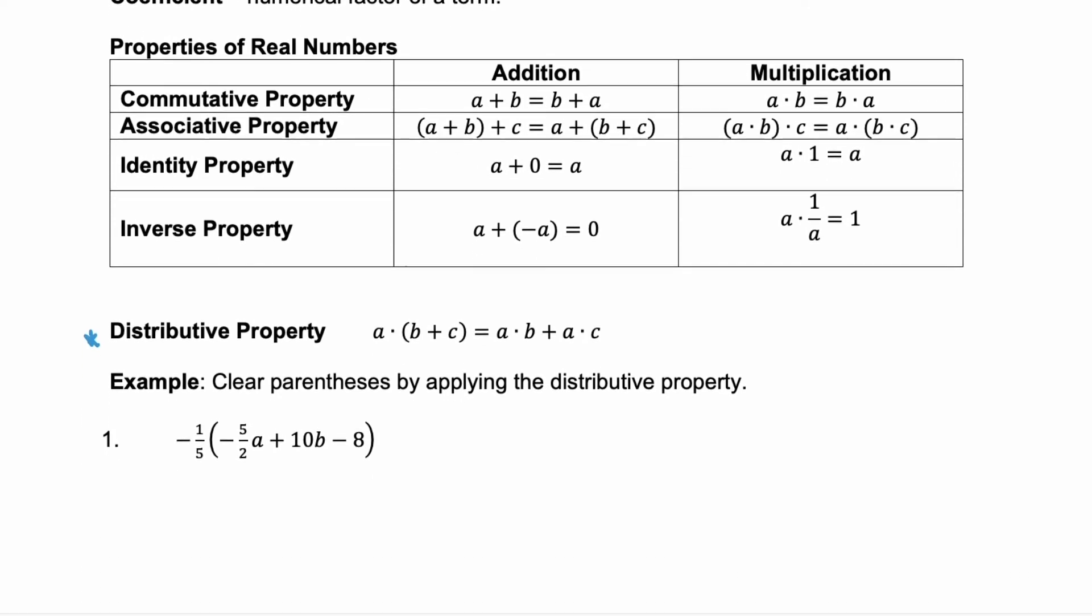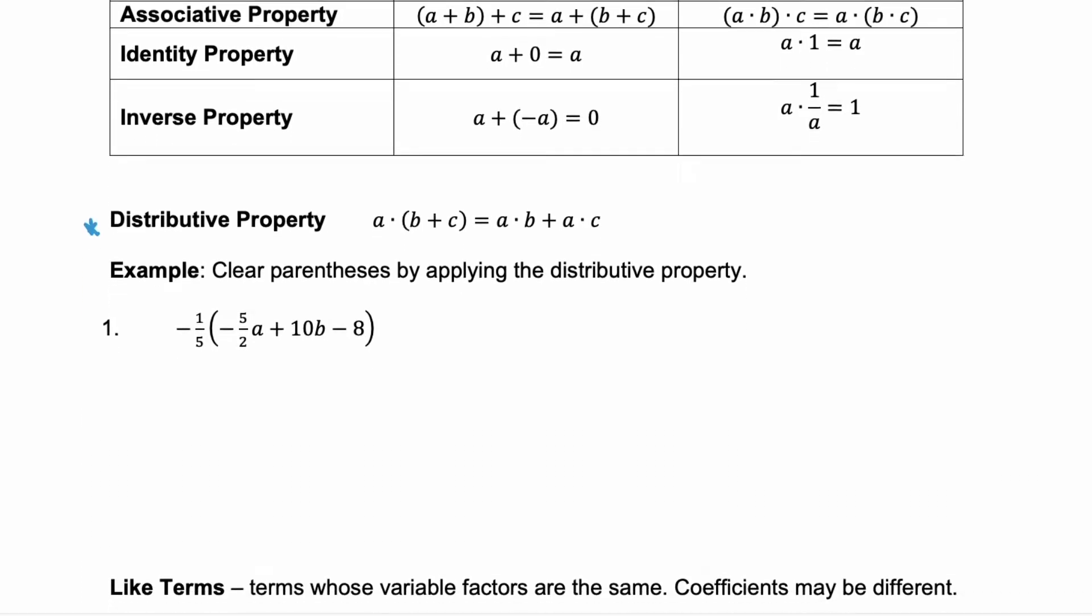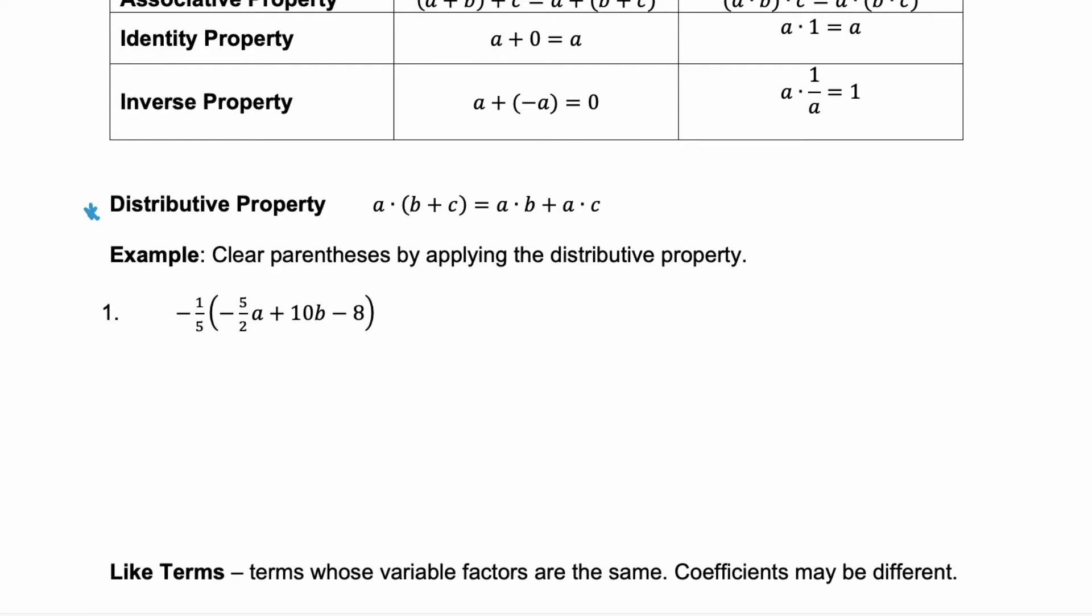In our first example we're going to clear the parentheses by applying the distributive property. So we're going to distribute negative 1/5 to each of these three terms.